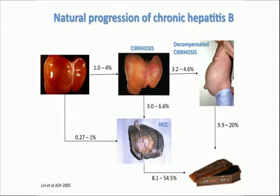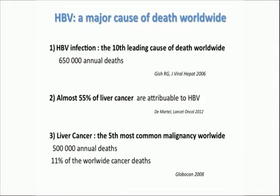Chronic hepatitis B is a serious disease because it can lead to cirrhosis in 1 to 4% of cases, with the risk of decompensation, liver cancer, and death. As regards the number of cases in the world, we can understand why HBV is a major cause of death. Indeed, HBV infection is the 10th leading cause of death worldwide, and more than 50% of liver cancers are due to viral hepatitis B. Liver cancer is the fifth most common malignancy, leading to 500,000 annual deaths.